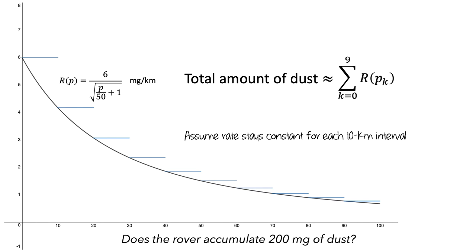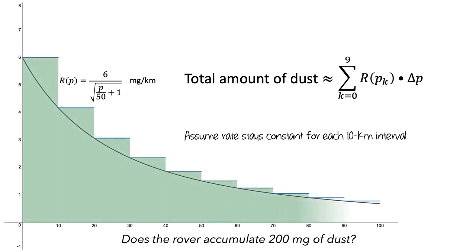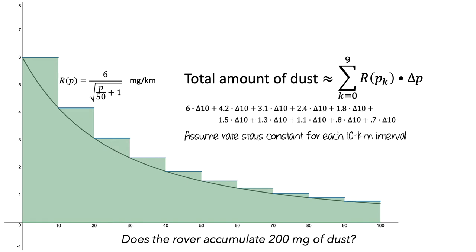Then to find the amount of dust that accumulates in each interval, we multiply the rate of accumulation for each interval by the amount of change in position for each interval, which makes our graph look like this. So to find the amount of dust in the first interval, we multiply r of 0 by delta p — which is 6 milligrams per kilometer times 10 kilometers — and we do this for each interval, adding these values up to get a total of 229 milligrams of dust that has accumulated.